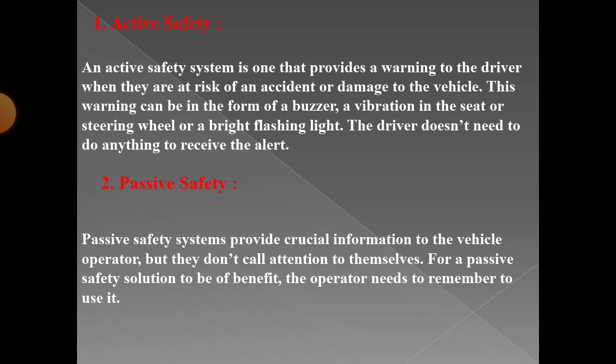An active safety system is one that provides a warning to the driver when they are at risk of an accident or damage to the vehicle. This warning can be in the form of a buzzer, a vibration in the seat or steering wheel, or a bright flashing light. The driver doesn't need to do anything to receive the alert — it is simply a warning from the safety system.